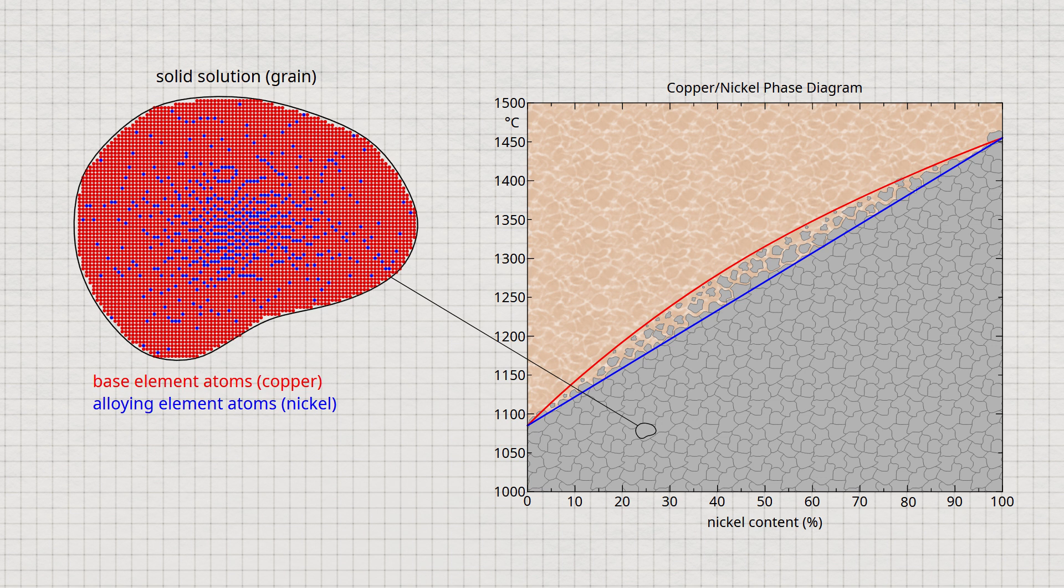For example, while the center of the grain has a relatively high nickel content, the peripheral areas of the grain tend to be low in nickel.